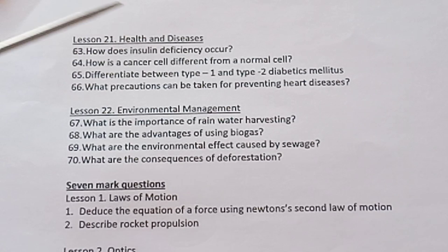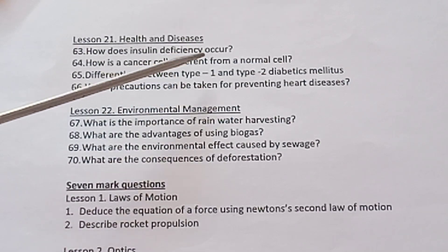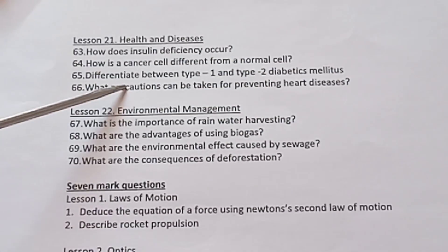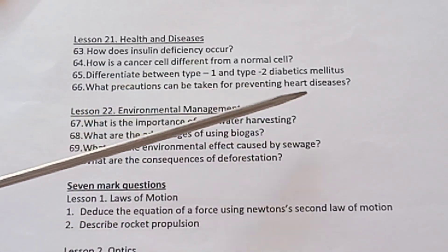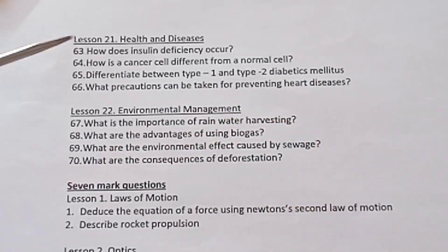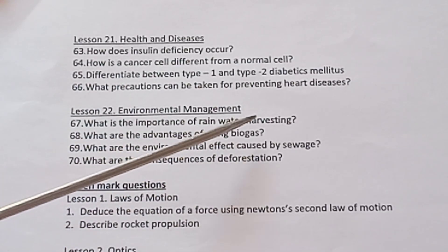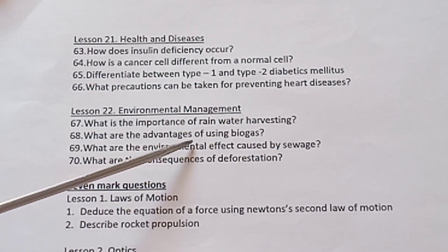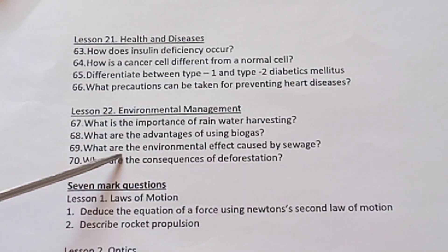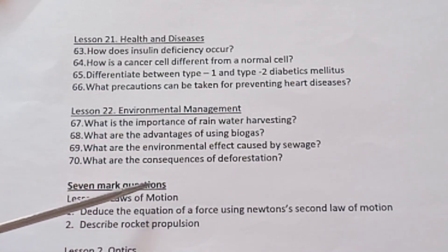Lesson 21 Health and Diseases. How does insulin deficiency occur? How is a cancer cell different from normal cell? Differentiate between Type 1 and Type 2 diabetes mellitus. What precautions can be taken for preventing heart diseases? Lesson 22 Environmental Management. What is the importance of rainwater harvesting? What are the advantages of using biogas? What are the environmental effects caused by sewage? What are the consequences of deforestation? Seven mark questions.